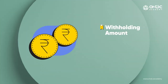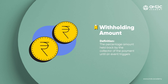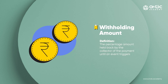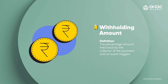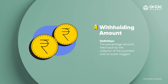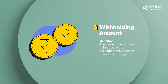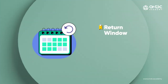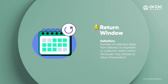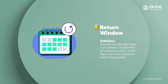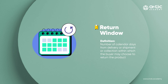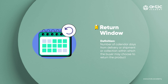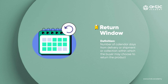Next is the withholding amount, which is a percentage of payments held back by the payment collector until a certain event is triggered. For example, the buyer may choose to disburse 50% of the payment post-delivery and the remaining 50% after the end of the return window. Last, both the seller network participant and buyer network participant will have to agree on a return window — the number of days after delivery, shipment, or collection within which the buyer can return their product, if returnable.